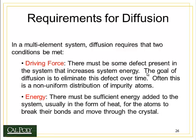So what are the requirements for diffusion? First, we need a driving force — some defect present in the system, such as the phase interface in the xenon particles or the non-uniform distribution of copper and nickel. The goal of diffusion is to eliminate this defect over time. If there is no defect or driving force, atoms can still move around randomly, but we don't notice any net change in the system. We also need energy to provide atoms with enough energy to move around inside the crystal. If it were absolute zero, there would be no energy and therefore no ability for atoms to move. Typically this energy comes in the form of heat.